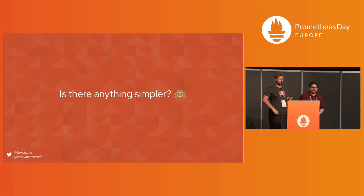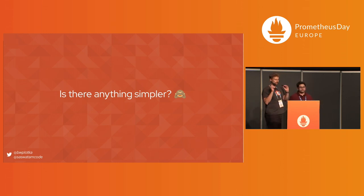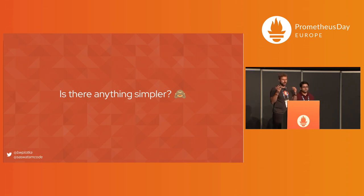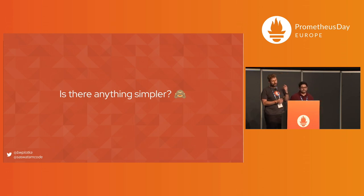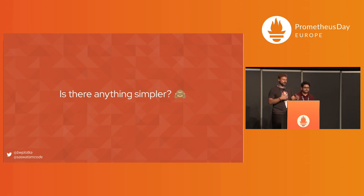The two mentioned solutions — pushing events and pushing metrics — have their smaller or bigger problems. The main theme is complexity. It might be fine for your requirements, but maybe there is something simpler we could do. Once you see the challenges with pushing events or metrics, it's easier to accept some kind of limitation of pull-based metrics.